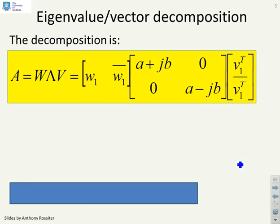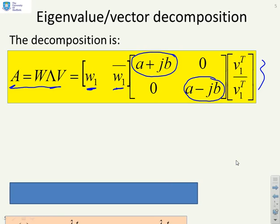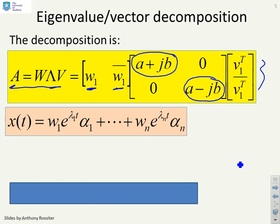If I have a two-dimensional matrix A equals W lambda V with complex eigenvalues, notice they come in complex conjugate pairs: one is a plus jb, the other must be a minus jb. If the eigenvector for one of these is W1, the eigenvector for the other must be W1 bar, the complex conjugate, and similarly for the left eigenvectors.